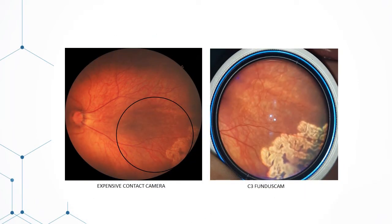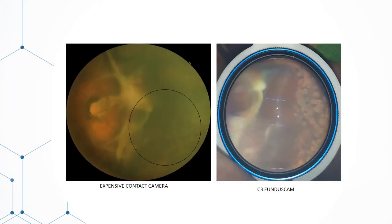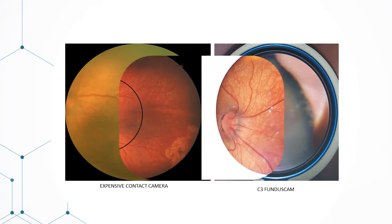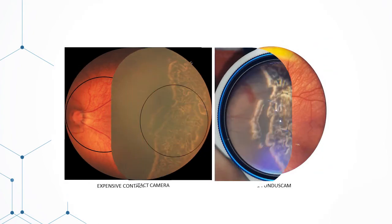These are a few comparative images between expensive contact cameras and the C3 Fundus Scan. You will notice that we are able to capture images of the retina up to the extreme periphery. The smartphone images are true color images and give a sense of depth and a 3D effect from an image quality point of view.